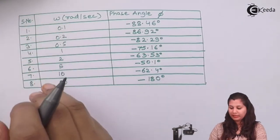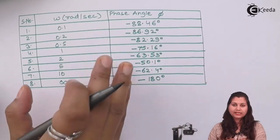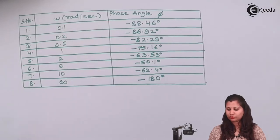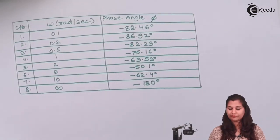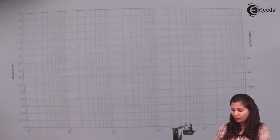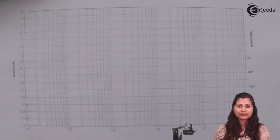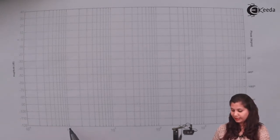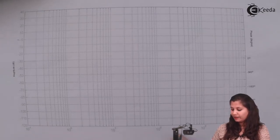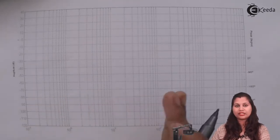For different values of ω we have obtained the phase angles. The Bode plot is the logarithmic plot of magnitude and phase angle versus frequency, drawn on semi-log graph paper. On the x-axis the divisions are in powers of 10: 0.1, 1, 10, 100, 1000, representing frequency in radians per second.